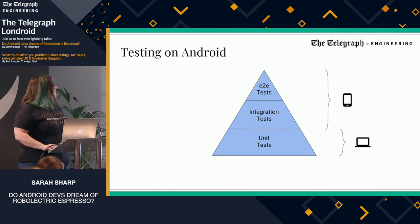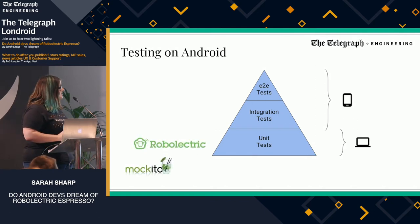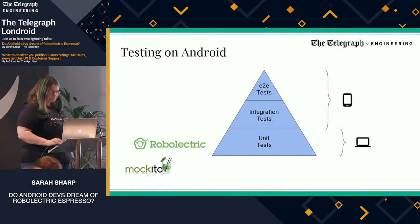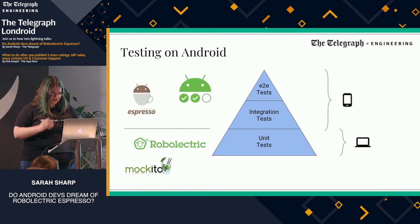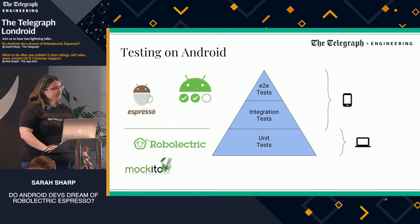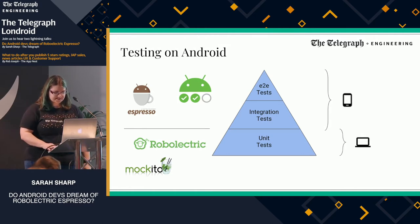There are various tools for this. Roboelectric and Mockito are common tools for dealing with unit tests and running things on the JVM. It's a way of mocking out things and simulating runs. Then we have Espresso and the Android testing support library, which allows us to run things on devices.